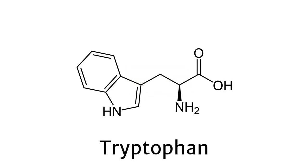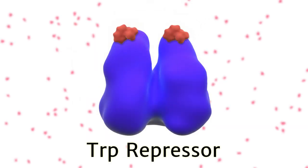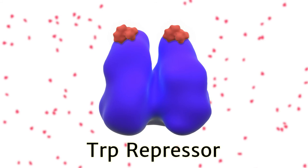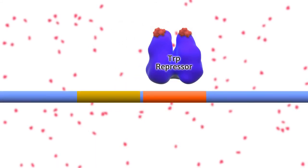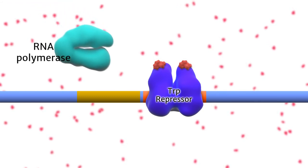For the trp promoter, tryptophan acts as a repressor of the system when it binds to a trp repressor protein. Binding of the combination of tryptophan to the trp repressor protein to the operator region prevents RNA polymerase from binding to the promoter region.